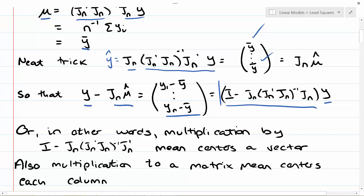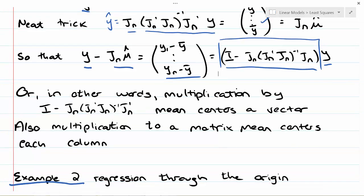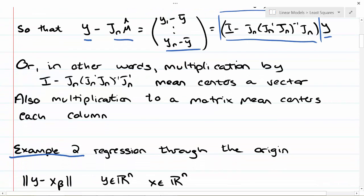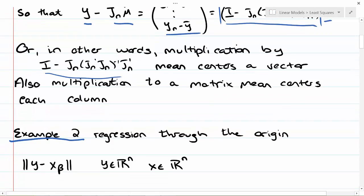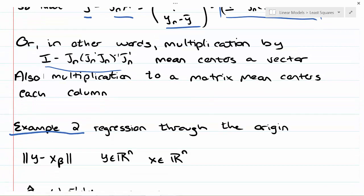If you need to mean center a vector, you can do it by that matrix multiplication, which is a neat trick. In other words, multiplication by this matrix, I minus the hat matrix starting from a vector of ones, mean centers a vector.